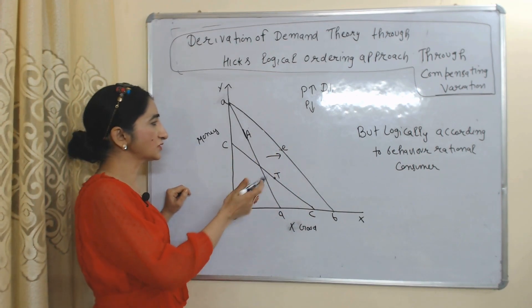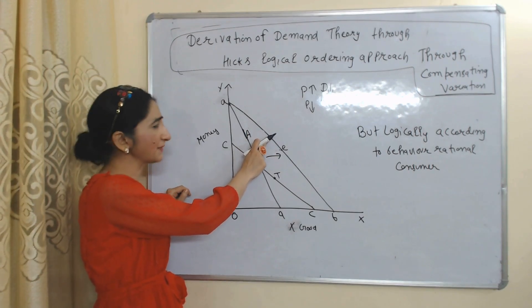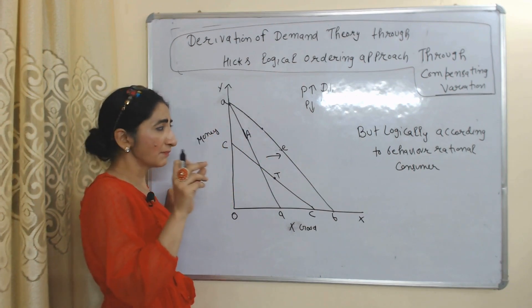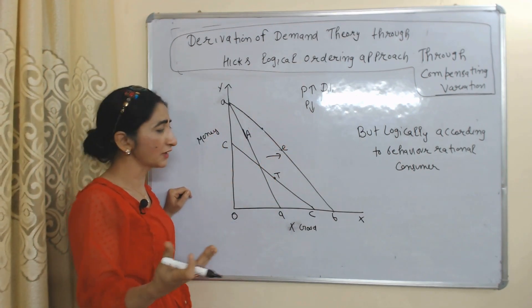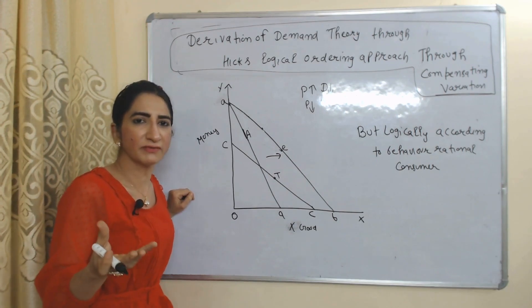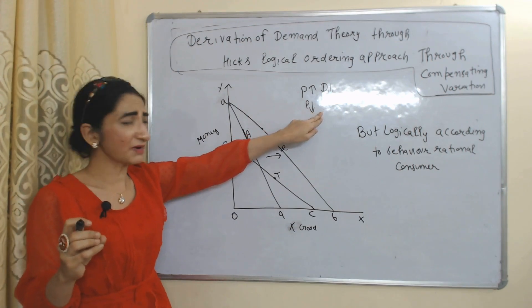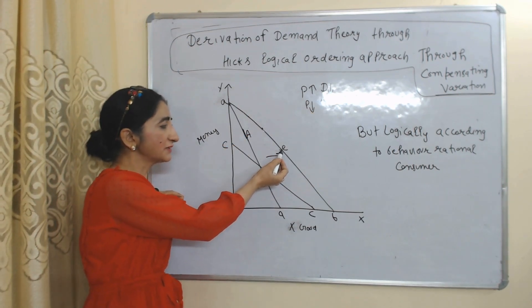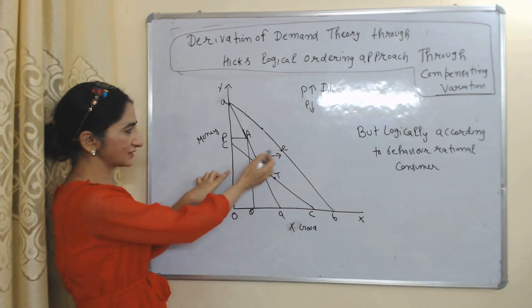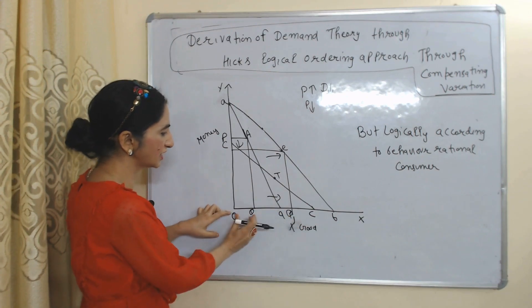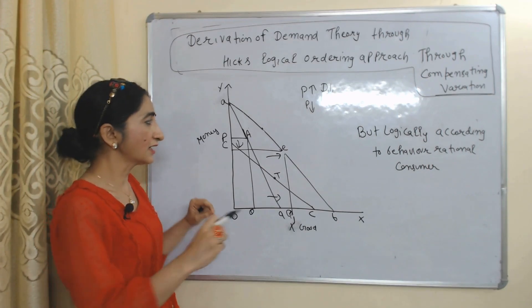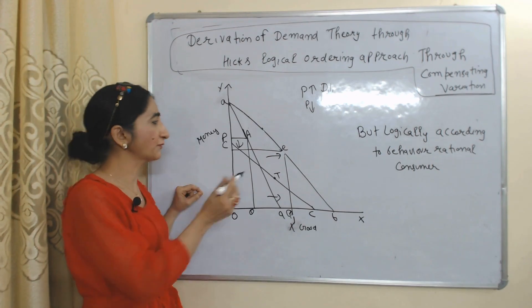According to Hicks, the consumer can establish equilibrium anywhere on the new budget line. But logically, a rational consumer should establish equilibrium at point E, because a rational consumer increases demand as price falls. At point A, when price is OP demand is OQ, but at point E, as price falls, demand increases from OQ to OQ1. So point E shows the behavior of a rational consumer — when price of X falls, the consumer shifts from point A to point E.